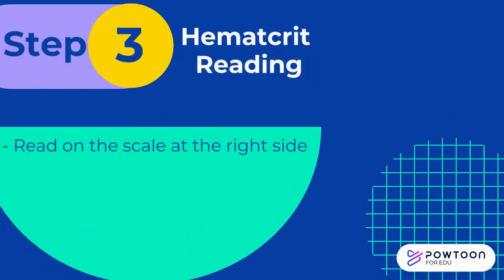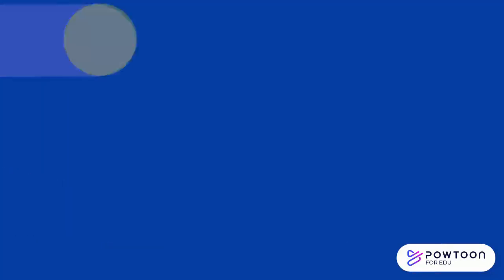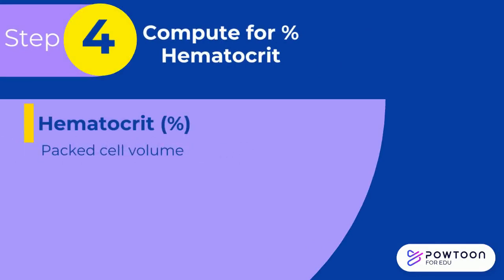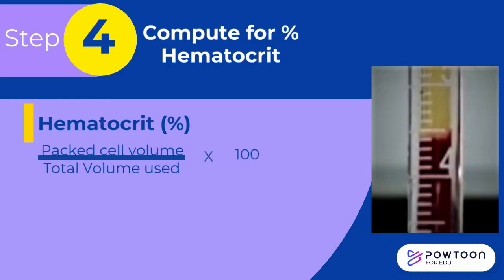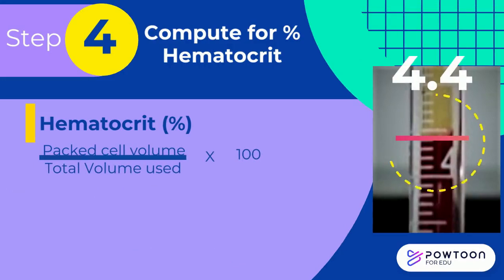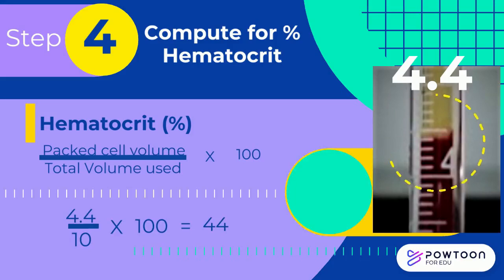Step 3 — Hematocrit reading: read the packed cell volume from the scale on the right side of the tube at eye level. Do not include the buffy coat layer in the reading. Step 4 — Compute percent hematocrit: hematocrit in percent equals packed cell volume divided by total volume used, multiplied by 100. In this example, the packed cell volume is 4.4, so 4.4 divided by 10 times 100 equals 44.